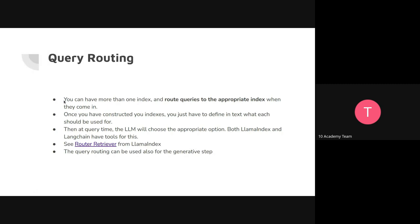You can use both — multiple indexes at the same time. In that case, depending on the kind of query you get, you can decide to route your query to the appropriate index. This is called query routing. When you construct your indexes, you define in text when to use each one. At query time, an LLM chooses which appropriate option to route through, and then that index is used. Both LlamaIndex and LangChain have tools for this.